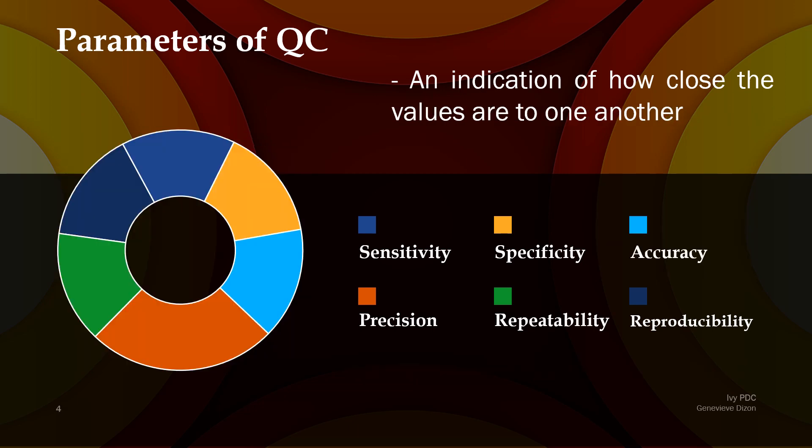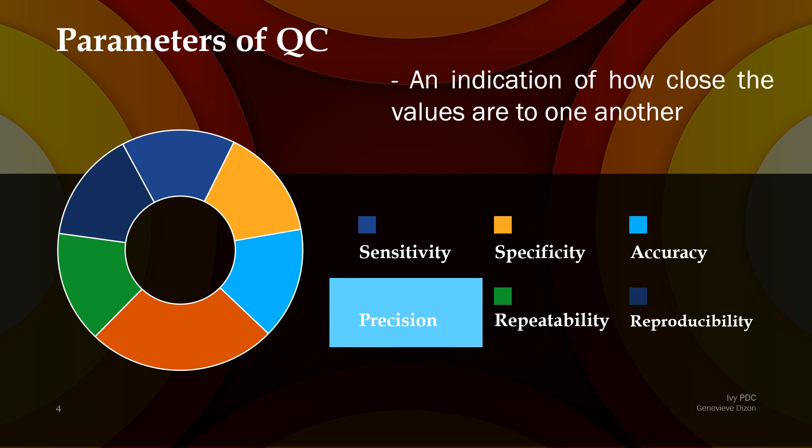For the second parameter, the definition is an indication of how close the values are to one another. Now we are looking at values to see if they are close to each other. Earlier, with accuracy, we were checking if the value is close to the true value. But this parameter describes whether the values are close to each other. The answer is precision — simply put, this is how close the measurements are with each other.